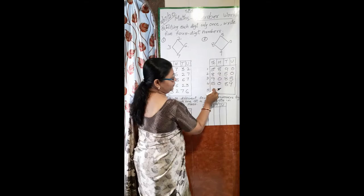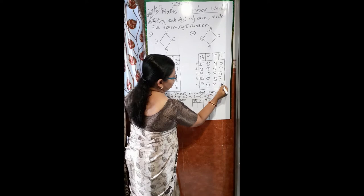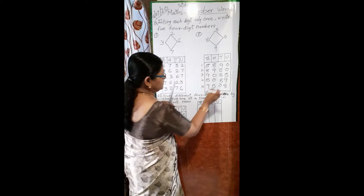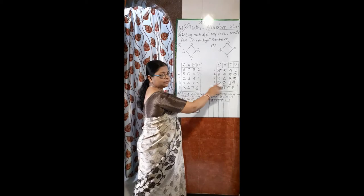One thing to keep in mind: zero should not come in the thousands place. Otherwise you can make other changes and write 9 in the thousands place, 5 in the hundreds place, 0 in the tens place, and 8 in the units place. The number will be 9508 — that is nine thousand five hundred and eight. This is how we made five four-digit numbers from these digits.